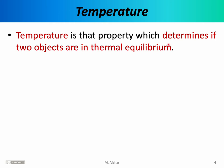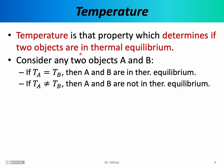Temperature is that property which determines if two objects are in thermal equilibrium or not. Once we have a reference object, we can assign numbers to different states of that reference object — these numbers are known as temperatures. For example, by placing objects A and B each in contact with our thermometer, we can assign numbers called the temperature of A and the temperature of B. If those temperatures are equal, A and B are in thermal equilibrium; if not, they are not in thermal equilibrium. We never have to put A and B in actual physical contact — only separately in contact with our thermometer.